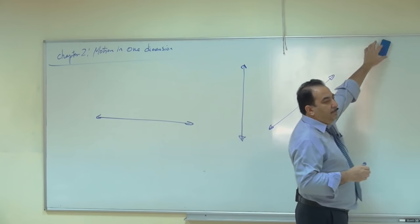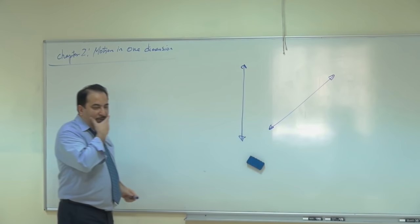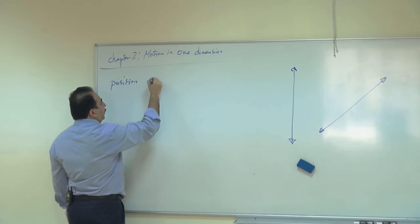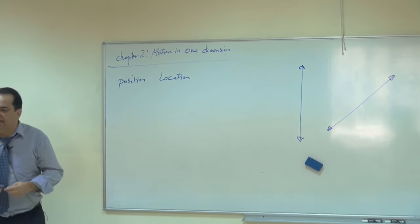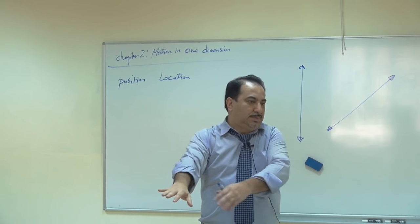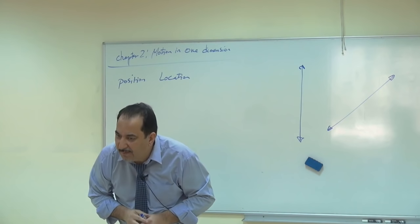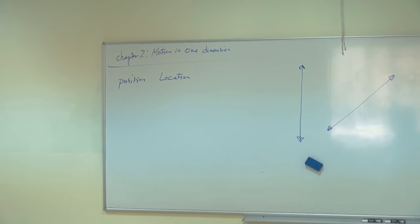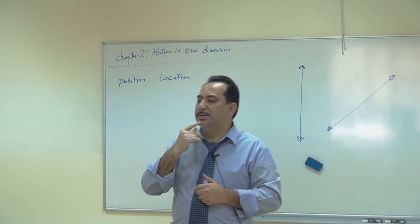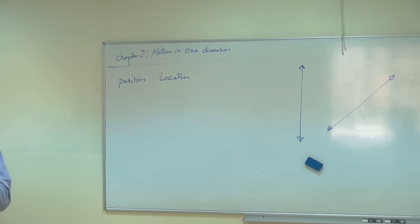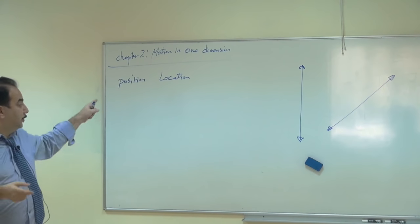To describe an object moving in one dimension, the first thing we have to talk about is position or location. If I ask you what is your position, students? One student says first row, another says second row. Try to think of another way — what is your position, Zain? Between these two students. What is your position as a location? Fifth — but fifth from where? From the first row.